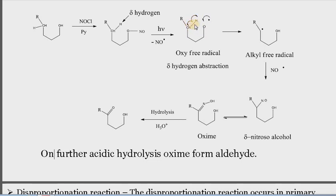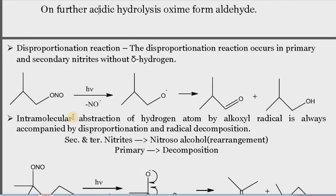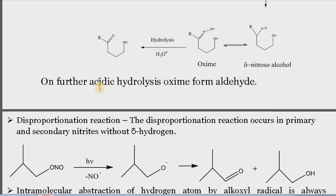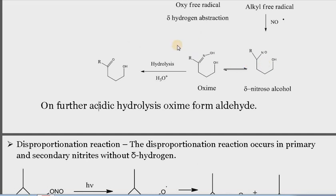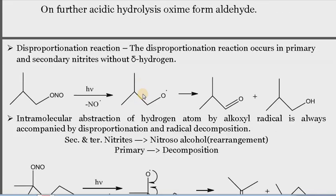After the completion of this reaction, it is a very simple reaction. You just put the NO on the place of this hydrogen and sweep this hydrogen to this oxygen, and we get the delta-nitroso alcohol. In some cases, this reaction does not follow this path — it may perform a disproportionation reaction.